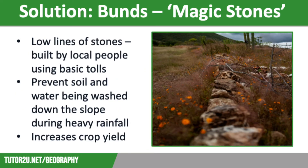A really common solution to desertification is the use of buns, which are also known as magic stones. In some parts of the Sahel such as Burkina Faso, local communities have constructed low lines of stones along contour lines. These stone walls are between 0.5 and 1.5 meters high and have been built using basic tools. These contour traps prevent soil and water being washed down the slope during heavy rainfall, meaning more water infiltrates the soil. This has helped increase crop yield by up to 50% and significantly reduces the risk of desertification.